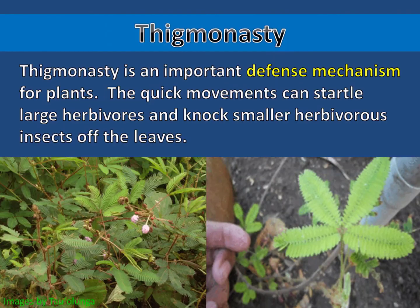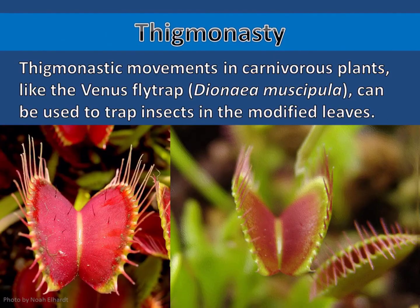Thigmanasty is an important defense mechanism for plants. The quick movements can startle large herbivores and knock smaller herbivorous insects off the leaves. Thigmanasty movements in carnivorous plants, like the Venus flytrap, can be used to trap insects in modified leaves.